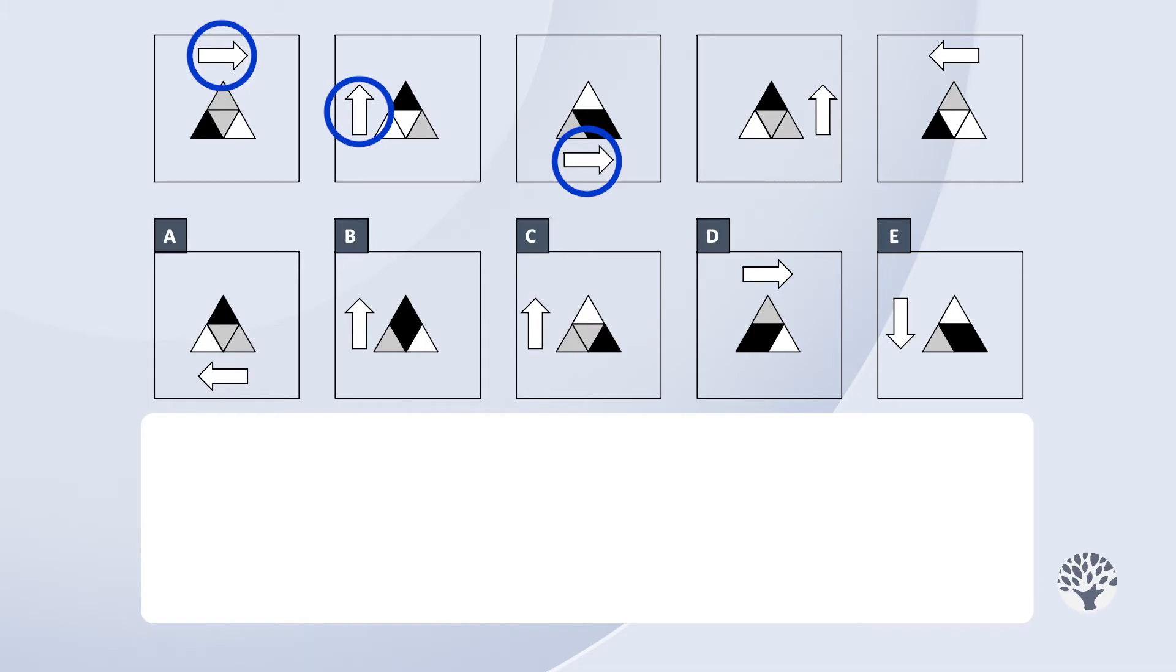So, we can see a pattern for the position of the arrow. It rotates 90 degrees anti-clockwise from one frame to the next. This pattern also applies to the fourth and fifth frames.